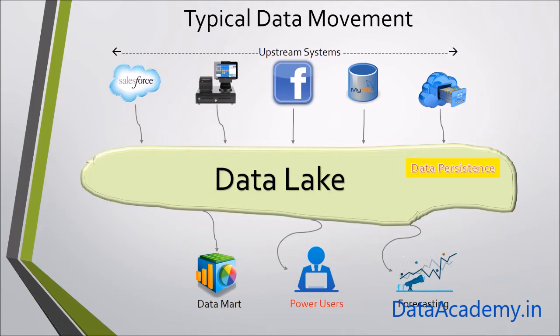However, this presents a problem — the problem of data freshness. What is the guarantee that the data in the data lake is current, the latest that is available? What if there is a latency between the upstream system providing the data to the data lake? Often there are needs for downstream systems where they need access to the most current information and not historical information.